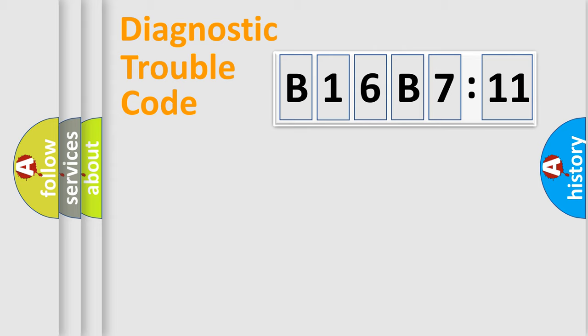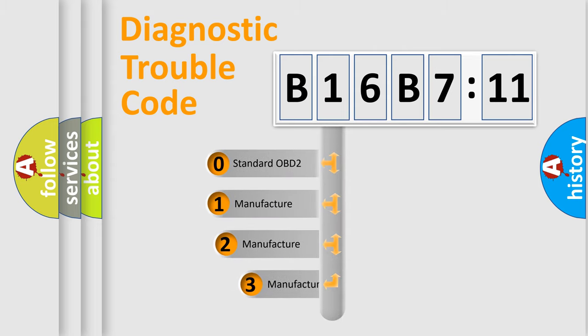Powertrain, Body, Chassis, and Network. This distribution is defined in the first character code.